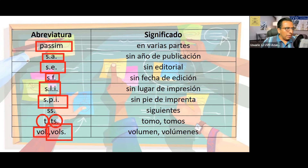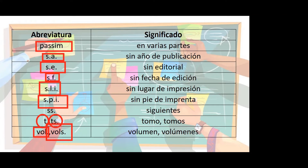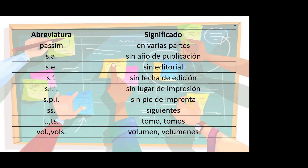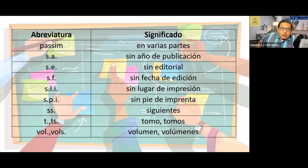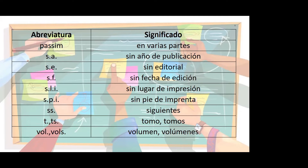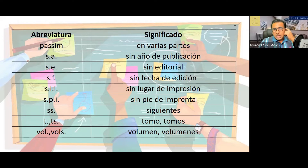Si se citan dos tomos y después se le pone la abreviatura S.S. para no citar todos: nada más se va a señalar los libros que usted está consultando. Si la obra contiene diez tomos pero usted solamente consulta uno o dos, son los que vamos a agregar. Si hay más tomos consultados, para evitar señalar tomo uno, dos, tres, cuatro, cinco, ponemos uno, dos, tres... y los siguientes.